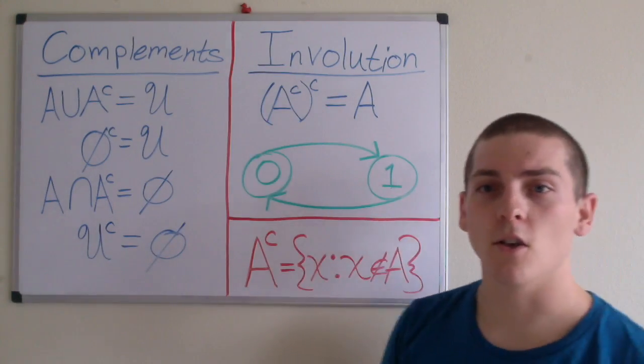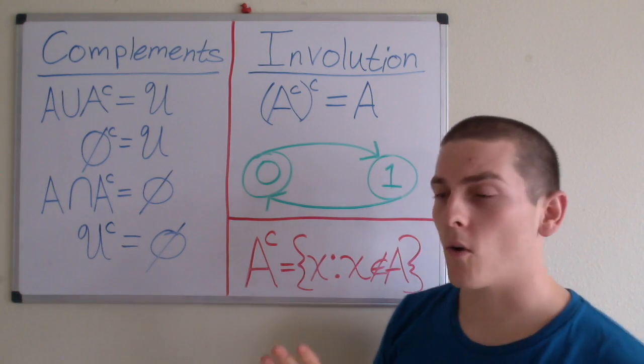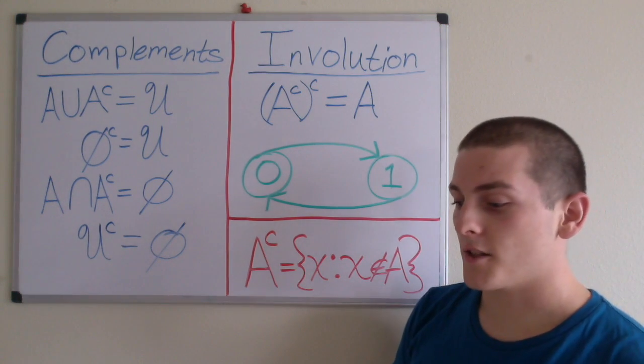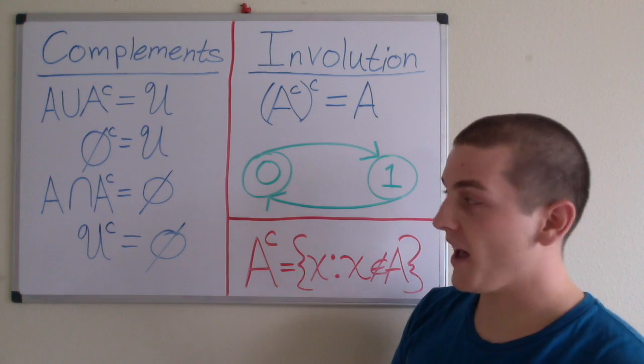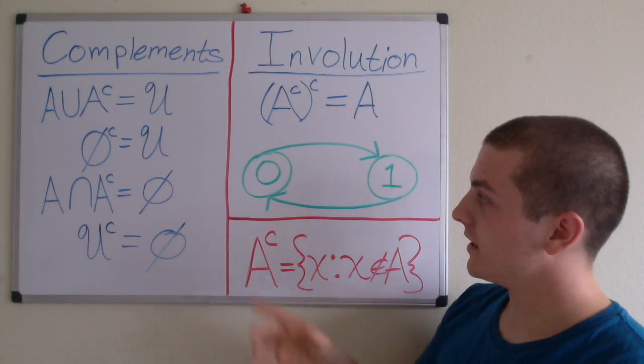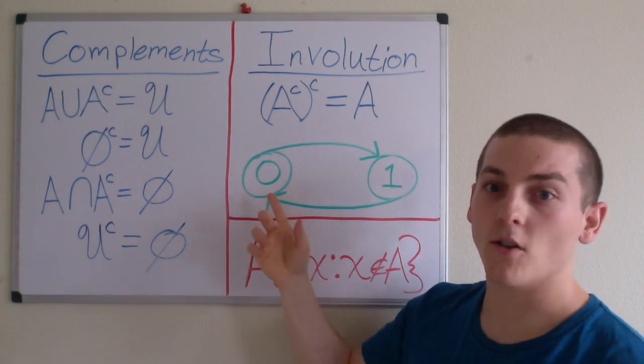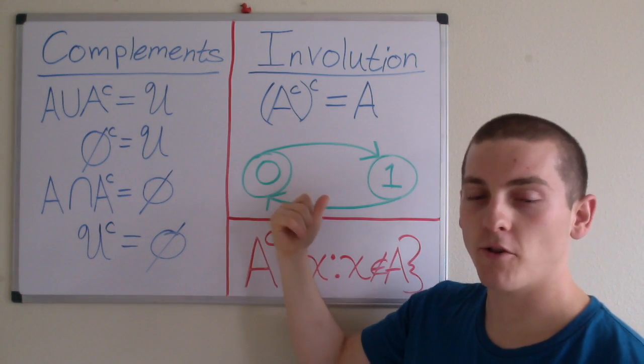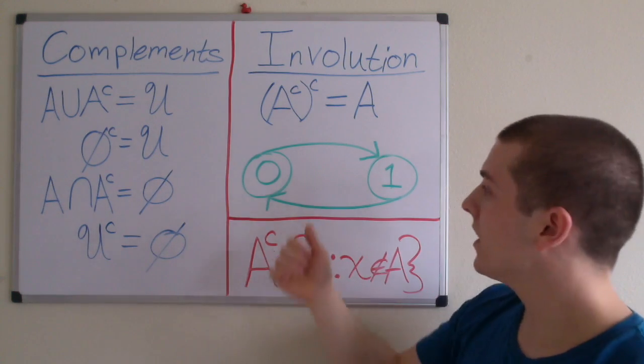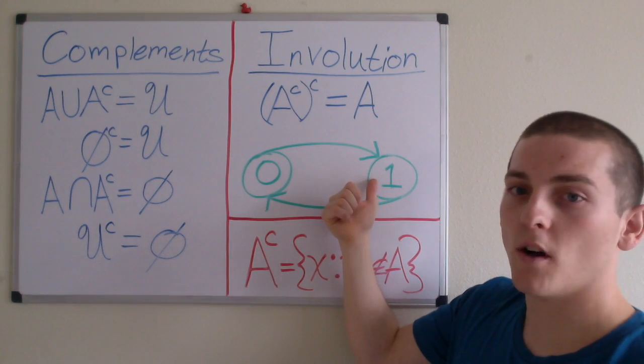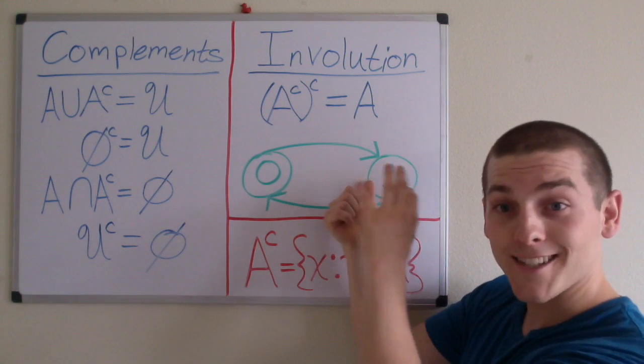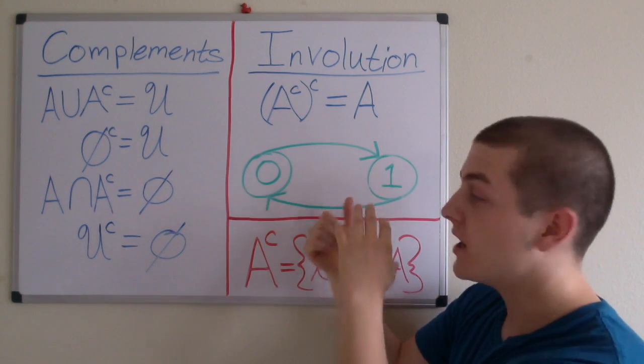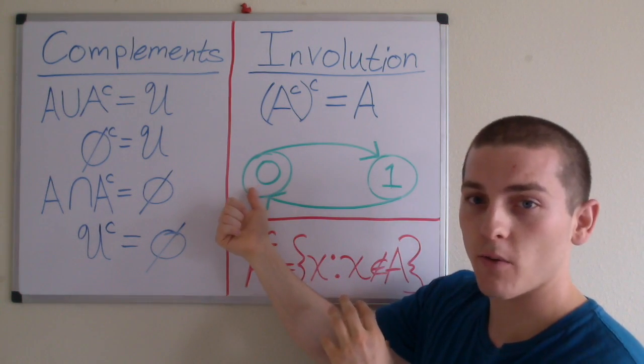The next one is the law of involution. So involution states that if we have a state here, we'll call it state 0, and we feed that state to a function. In this case, we're going to feed it to the complement function. Then when it gets to state 1, if we again feed it through the exact same function, the complement function, it will result in state 0 again.